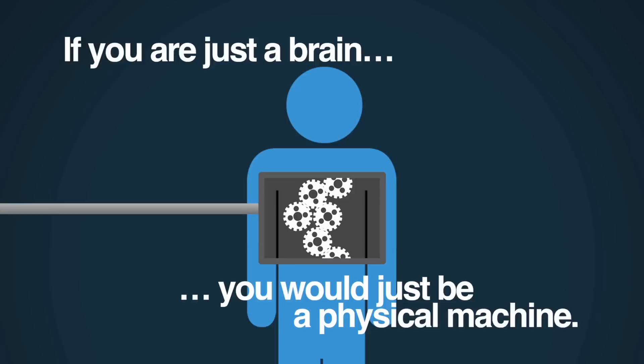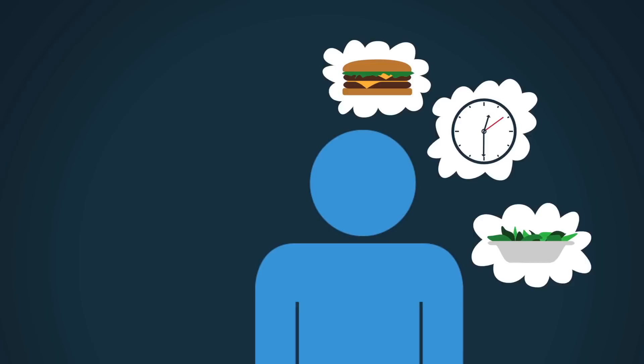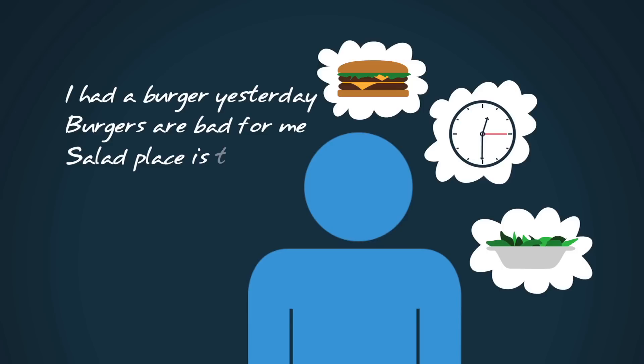But if you're something more than your brain, if you're the thing that has the brain, then when I ask you where do you want to go for lunch, you're going to start deliberating. You're going to be weighing your taste preferences, the commute time, perhaps even counting calories. You'd be weighing various reasons to choose one place over another. You wouldn't be caused to think about any of these things. You would choose to think about these things. And you could stop anytime you wanted to.